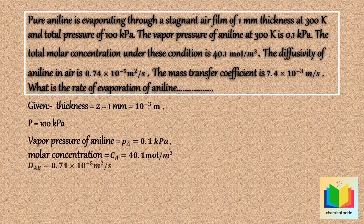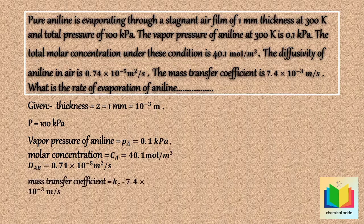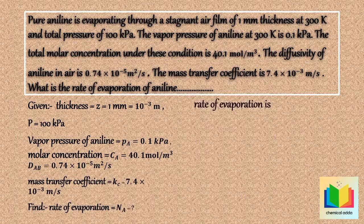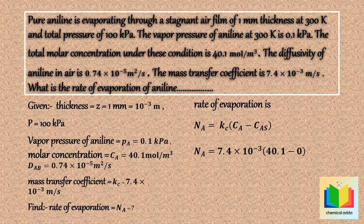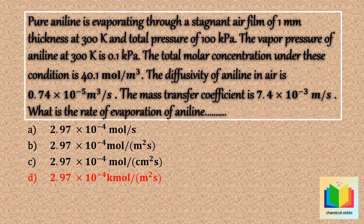Using the same data including kc = 7.4 × 10⁻³ m/s from the previous example, we find the rate of evaporation Na. The formula is Na = kc × (Ca − Cas). For complete evaporation, we assume Cas = 0. Substituting values: Na = 7.4 × 10⁻³ × 40.1 = 2.97 × 10⁻⁴ kilomole per meter square second. Answer: option D.